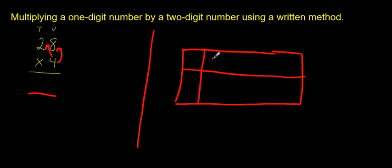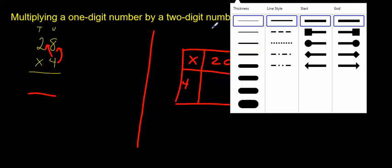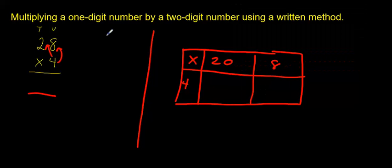You have 20, then you have 8, and you have 4 here, and you're multiplying. I'm just going to change back here.